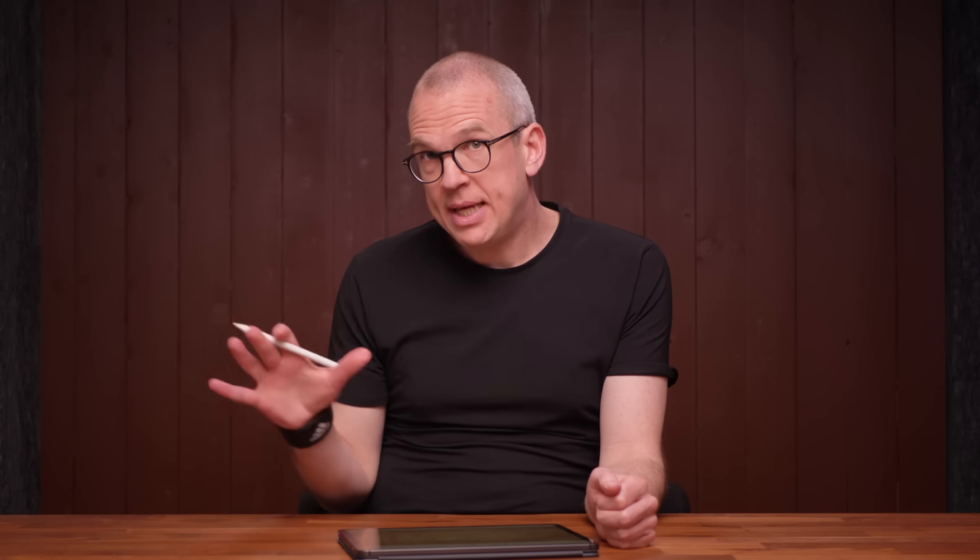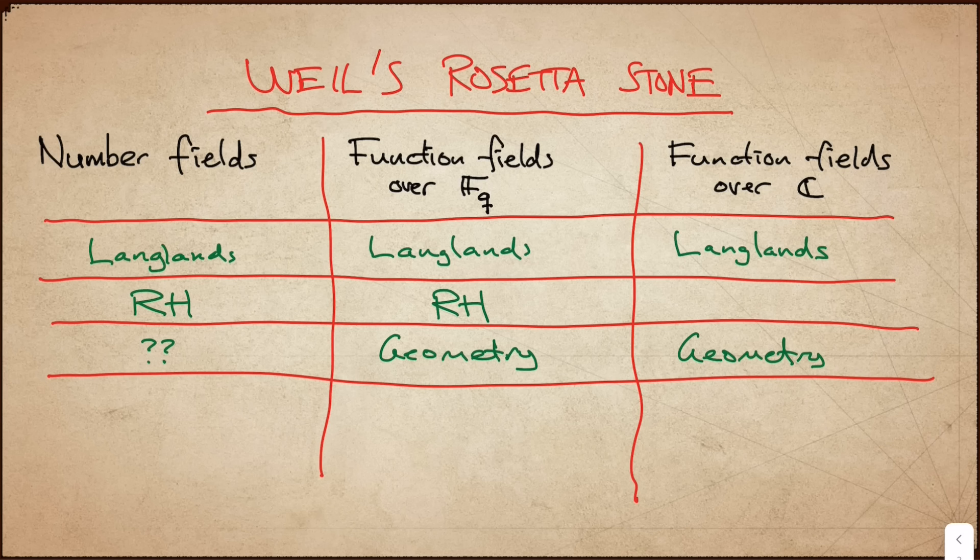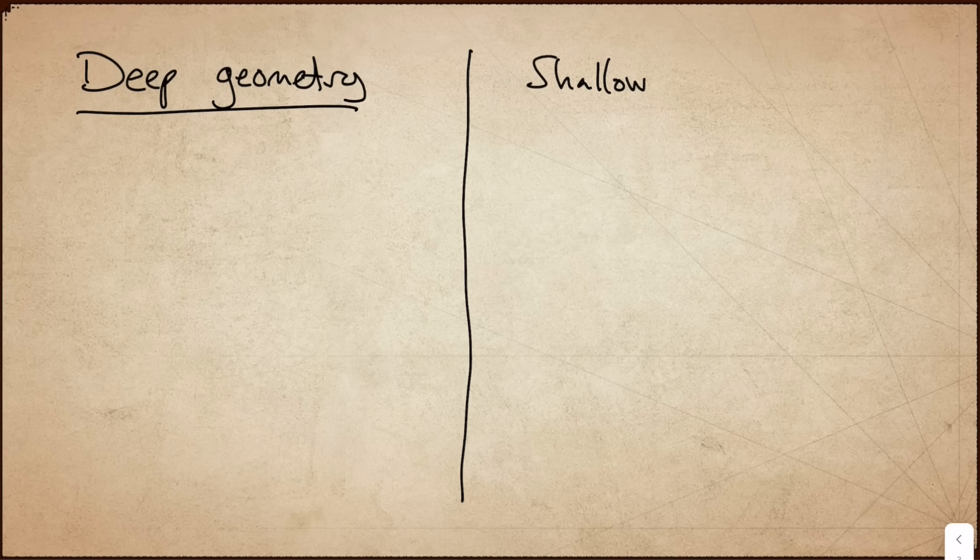So I want to make a few comments on this Rosetta Stone picture. First, when we speak of geometry over a finite field, or over the complex numbers, there are always two completely distinct types of geometry. I will now invent the words deep geometry and shallow geometry, just to describe these two paradigms.